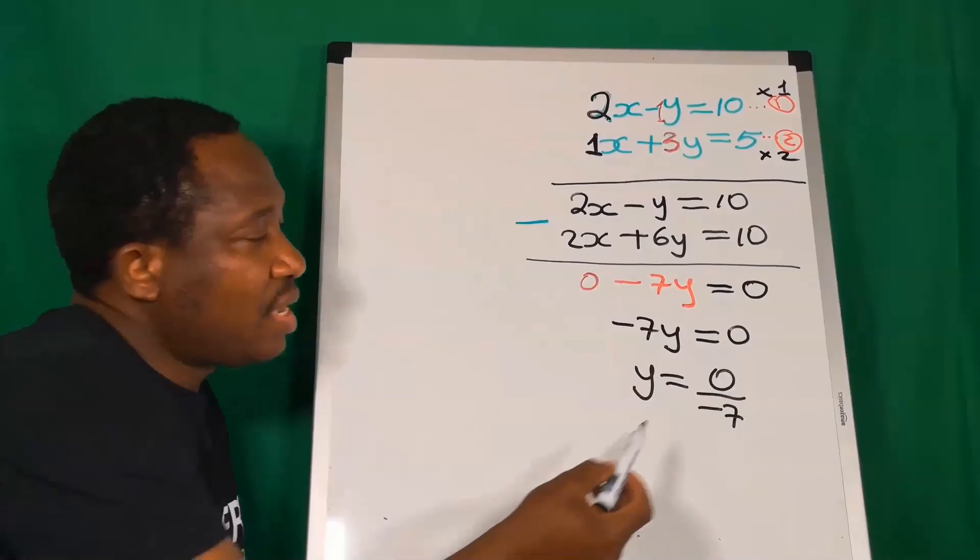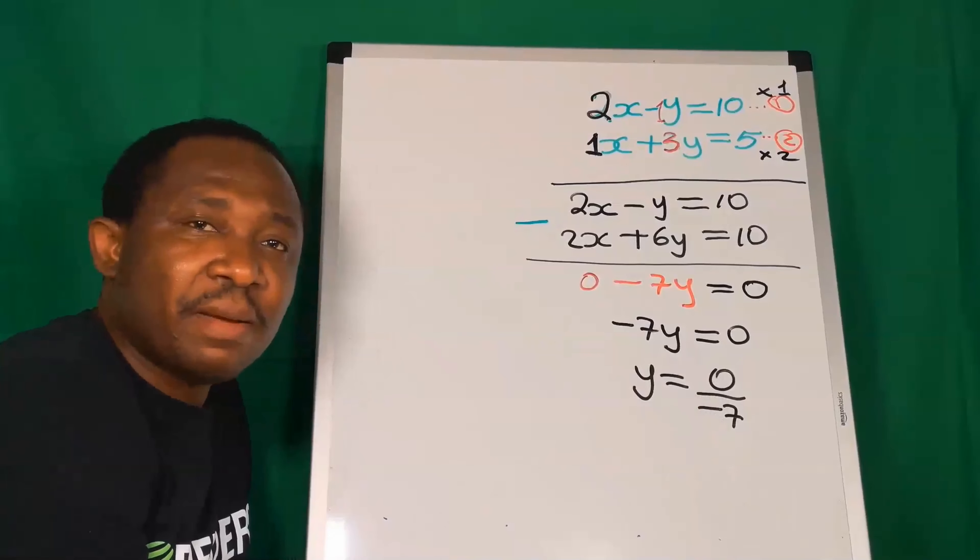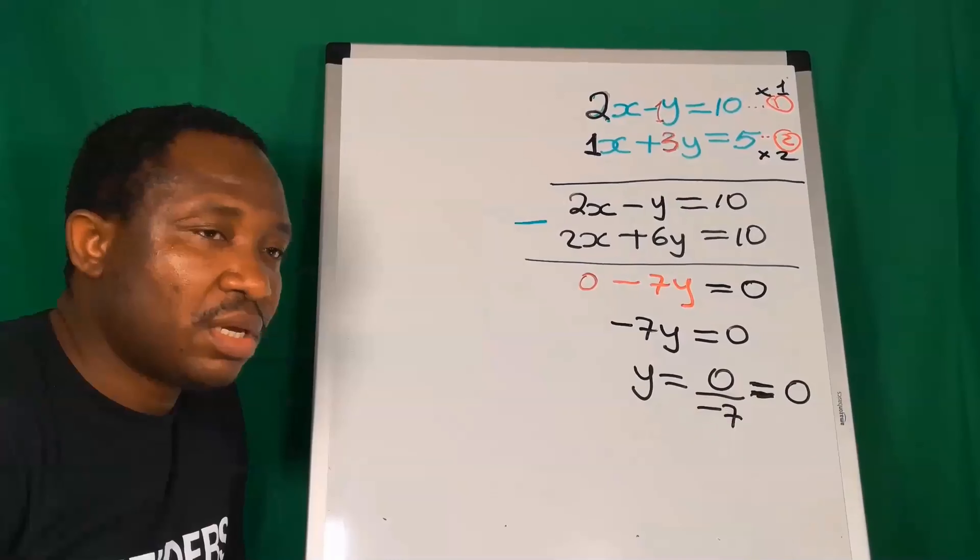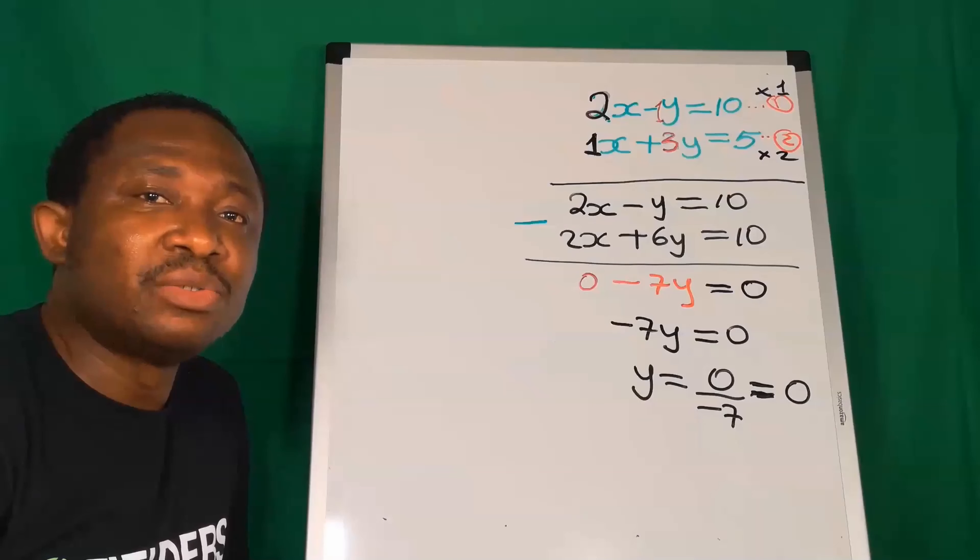In this simultaneous equation, this is equation 1 and this is equation 2. From equation 1, the coefficient of x is 2, and in equation 2, the coefficient of x is 1. They are not the same.